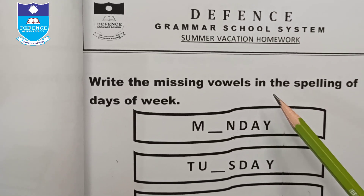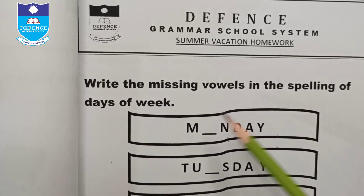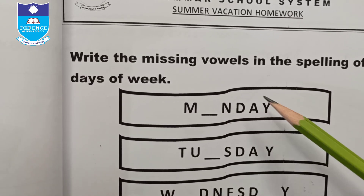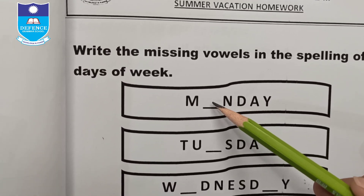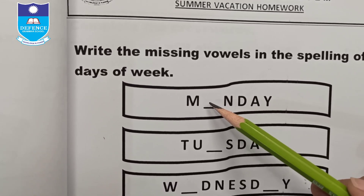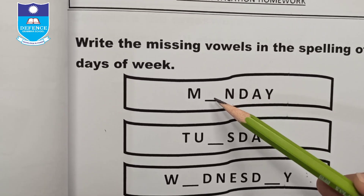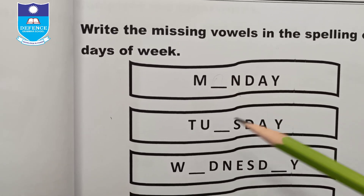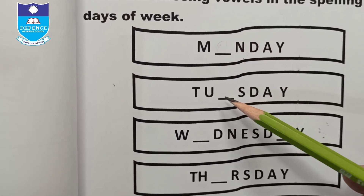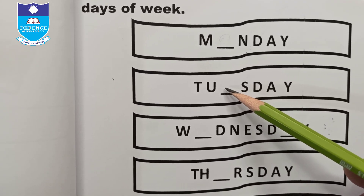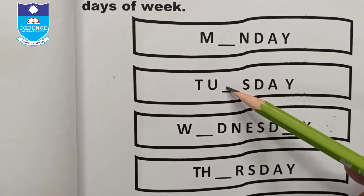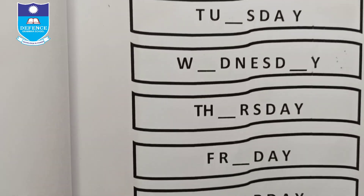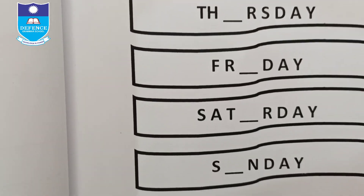Write the missing vowels in the spelling of the days of the week. The first one is Monday — M-O-N-D-A-Y. Similarly, Tuesday — T-U-E-S-D-A-Y. Fill in all the missing letters for all the days of the week.